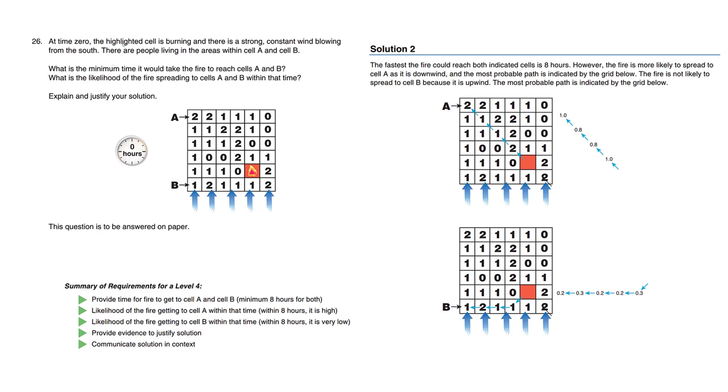At time zero, the highlighted cell here is burning, and there's a strong constant wind blowing from the south. So the wind is blowing upwards. There are people living in the areas within cell A and cell B. So people are living here and people are living here.